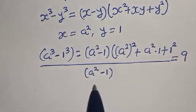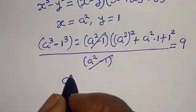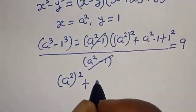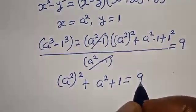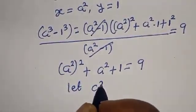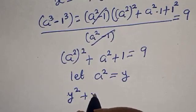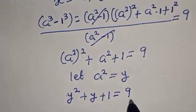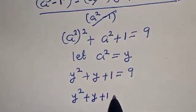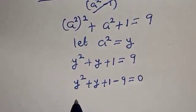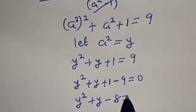From here, we have (a squared minus 1) in the numerator and (a squared minus 1) in the denominator — these cancel. We are left with a to the power 4 plus a squared plus 1 is equal to 9. Now let a squared equal y. We have y squared plus y plus 1 equals 9, which gives y squared plus y minus 8 equals 0.